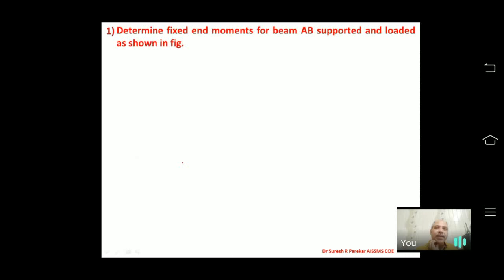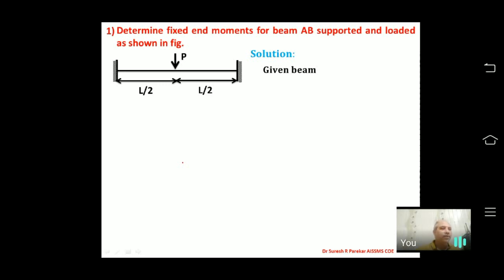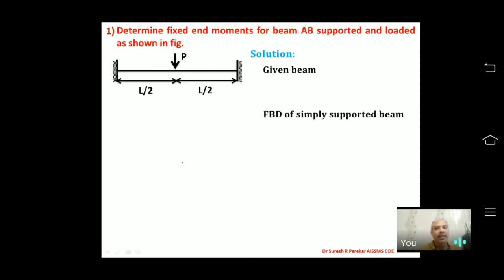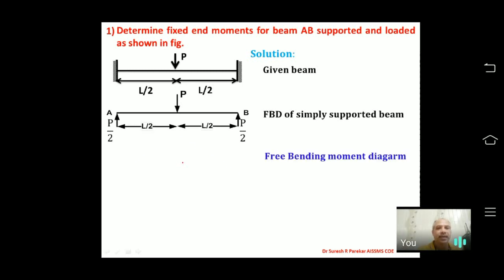First problem: determine fixed end moments for a beam supported and loaded as shown, with a concentrated load P acting at the center. Drawing the free body diagram for simply supported conditions, reactions are P/2 on each side. The free bending moment diagram gives a value of PL/4 at center (= P/2 × L/2).